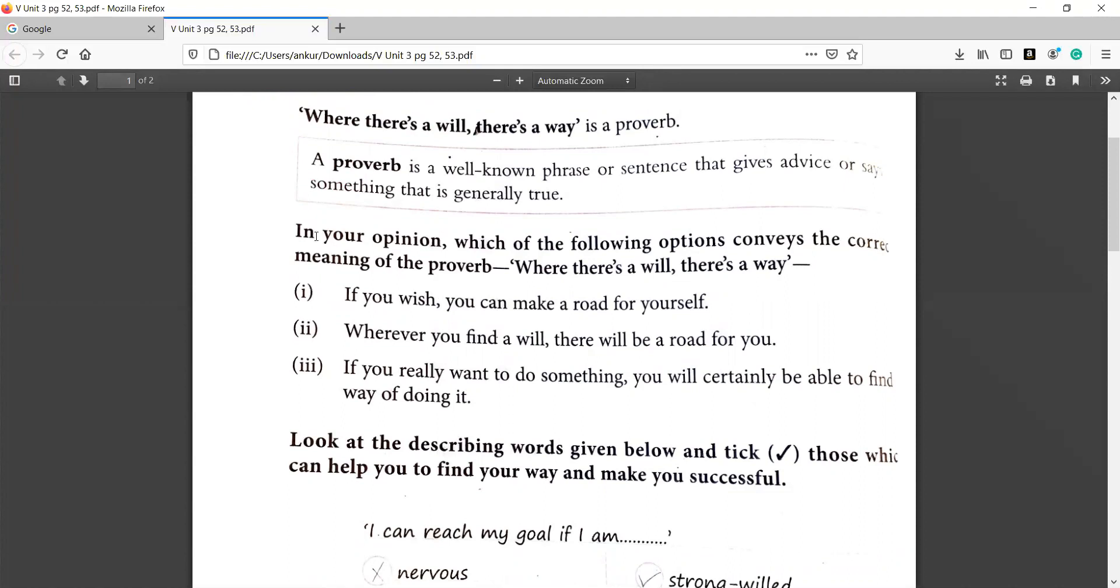Here it is given, in your opinion, which of the following options conveys the correct meaning of the proverb, where there is a will, there is a way. So aap kiya hesaab se, in tino mein se, in tino option mein se, kohon sa correct meaning convey kata hai is proverb ka.